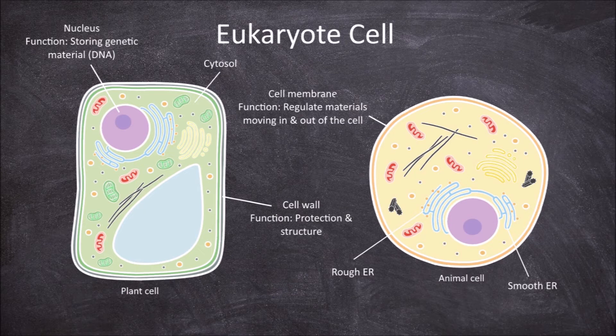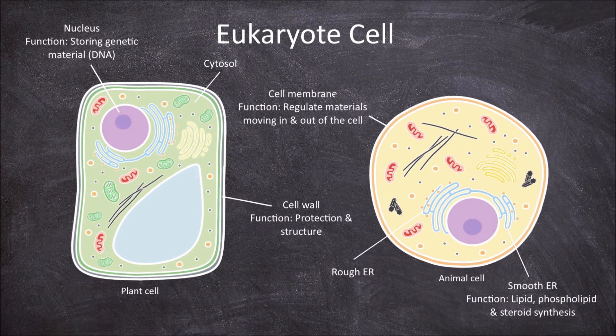The function of the smooth endoplasmic reticulum is in lipid, phospholipid and steroid synthesis. The function of the rough endoplasmic reticulum is in protein synthesis.